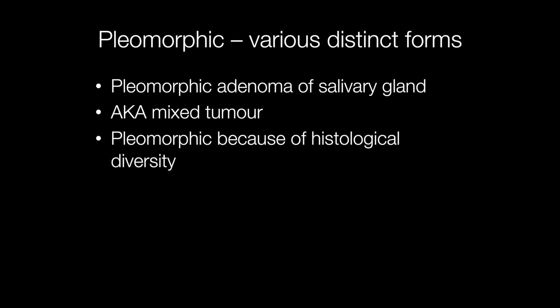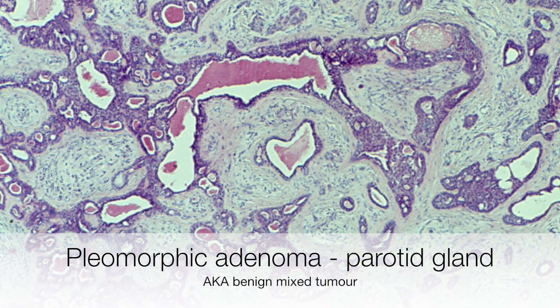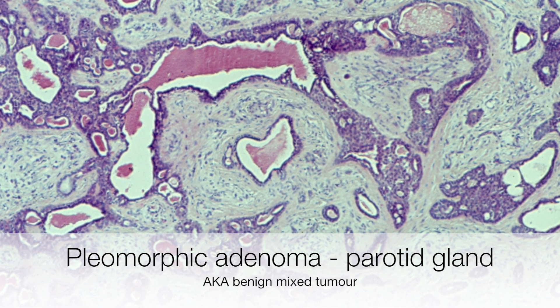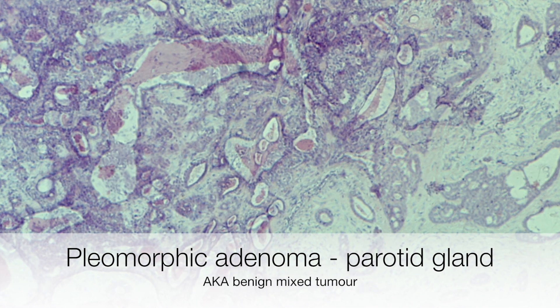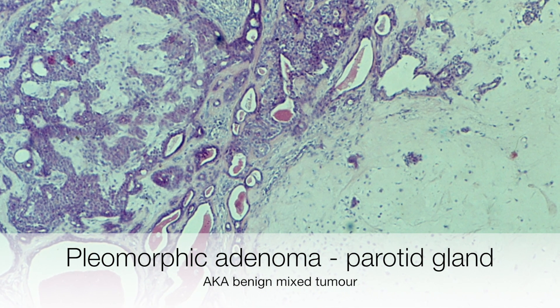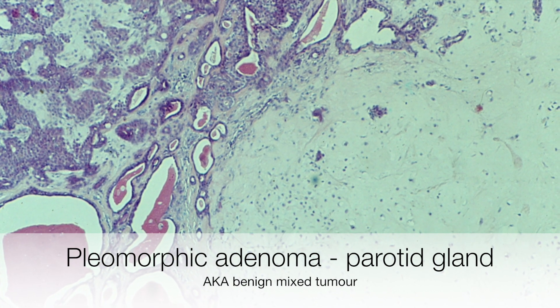As the name would suggest, pleomorphic adenoma or mixed tumour of the salivary gland is a really good example of pleomorphism in a tumour, and the term pleomorphic is used because of the histological diversity. Here is a pleomorphic adenoma and it can clearly be seen that there is architectural diversity within the tumour. On the left there is a proliferation of benign epithelial cells and towards the right there is mature benign cartilage.